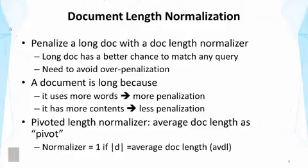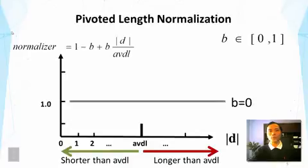A method that has been working well based on research results is called pivoted length normalization. The idea is to use the average document length as a pivot — as a reference point. That means we assume that for average-length documents, the score is about right, so the normalizer would be one. But if a document is longer than the average document length, then there will be some penalization. Whereas if it's shorter, there's even some reward. This is illustrated using this slide.